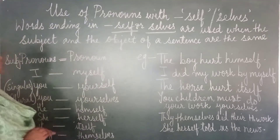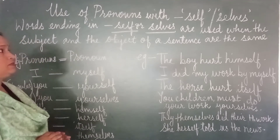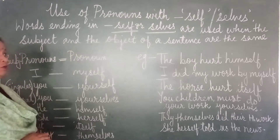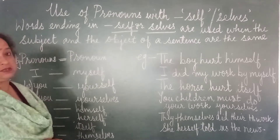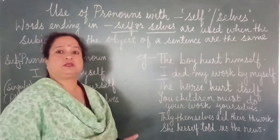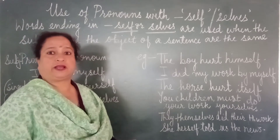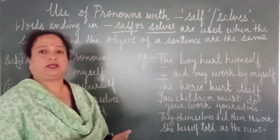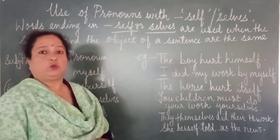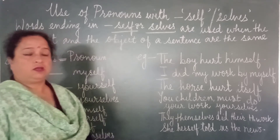Now children, words ending in self or selves are used when the subject and the object of a sentence are the same. That means when the person is talking about a particular action or anything done by himself, by themselves, we use the word self or selves.